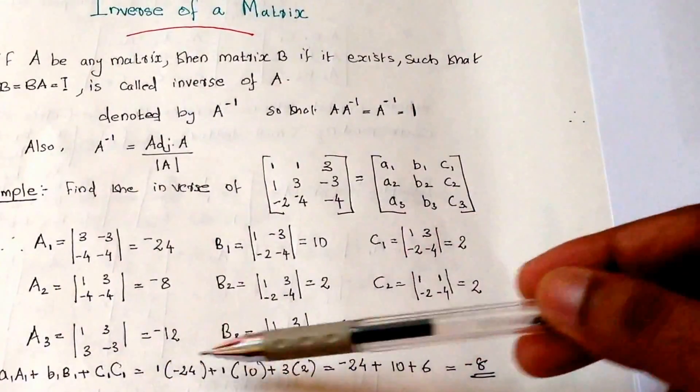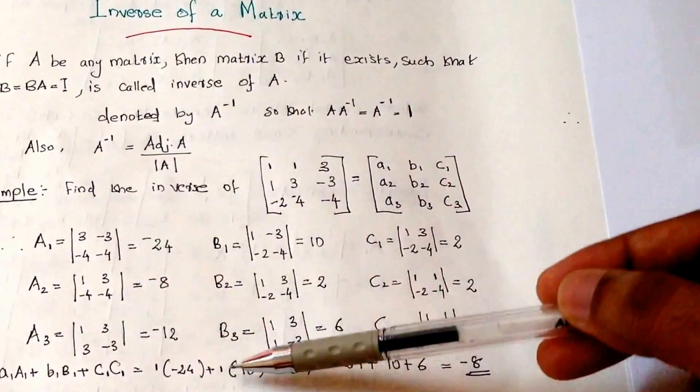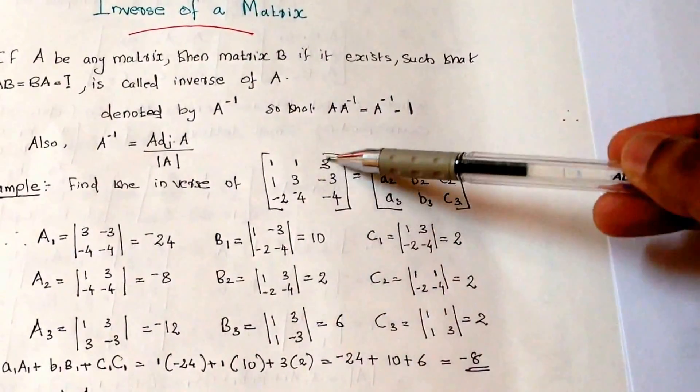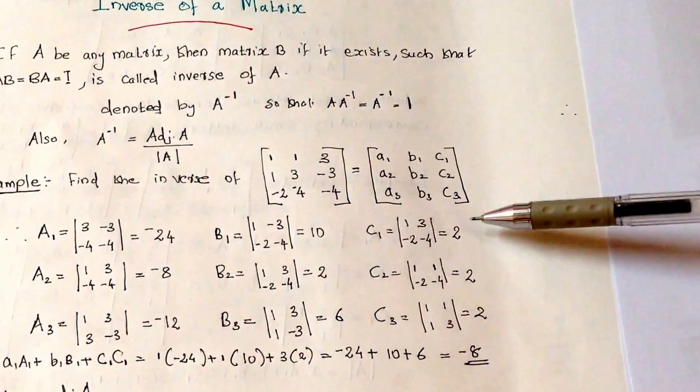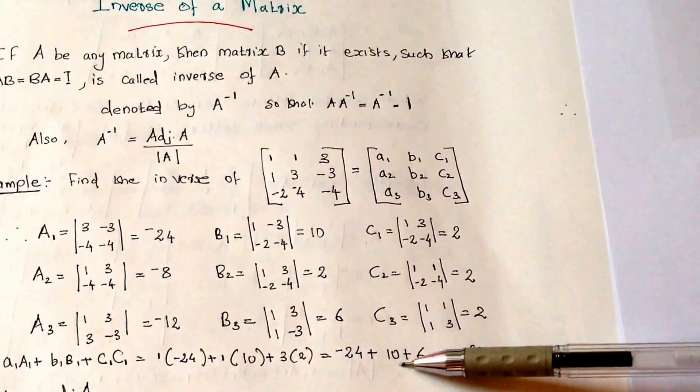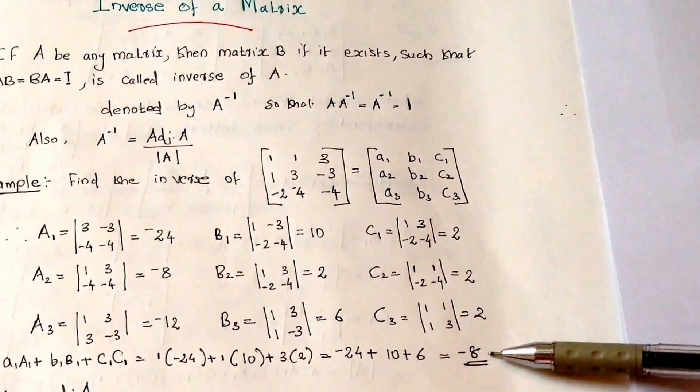So it will be 1 into minus 24, plus 1 into 10, plus 3 into 2. So we will get the answer equals minus 24 plus 10 plus 6. The answer will be minus 8.